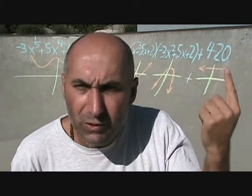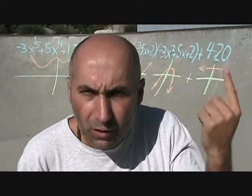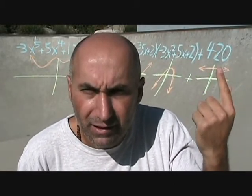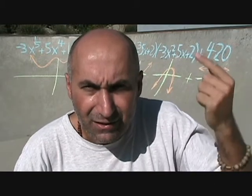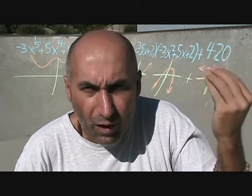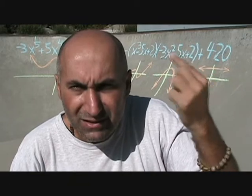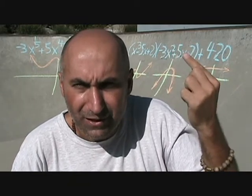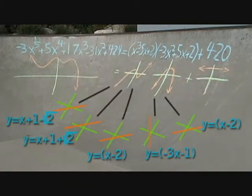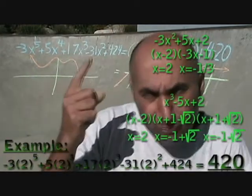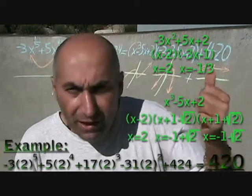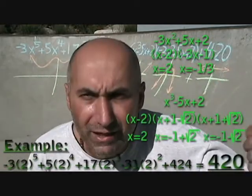Is the end result what we want? Is the remainder what we want? Keep in mind, this value here is your Y coordinate when your X values are the roots of these factors. You can break these down even further, factor them down to get your X values. And if you plug those X values into the original function, this is what you get out — you get 420 out.